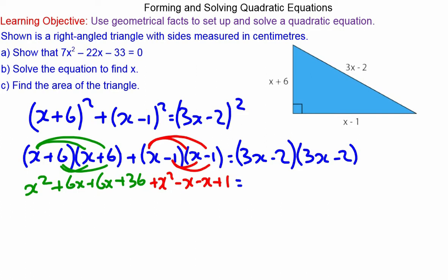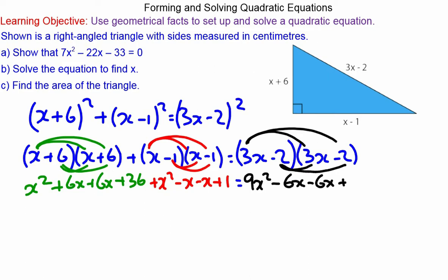Negative one squared is 1. Then (3x-2)² gives 9x². Three x times negative two is negative 6x, and again giving negative 12x, and negative two times negative two is positive 4. Now we can begin to simplify this long equation by collecting like terms.